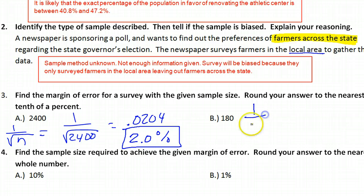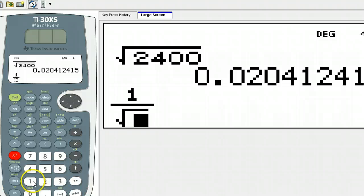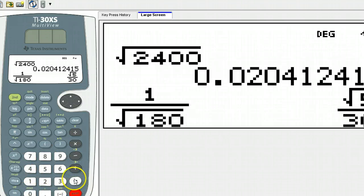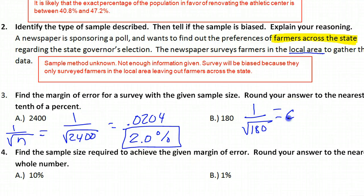Similarly, this will be one over the square root of 180. This is 0.0745, which translates into 7.5 percent. You've got to round up, five or higher. As you can see, the bigger the number is, the smaller the margin of error. The smaller the number is, the bigger the margin of error.